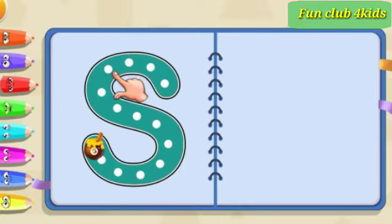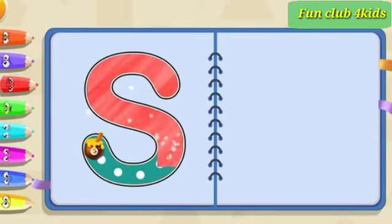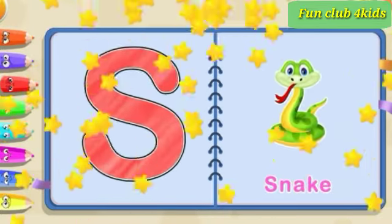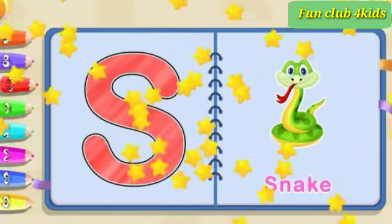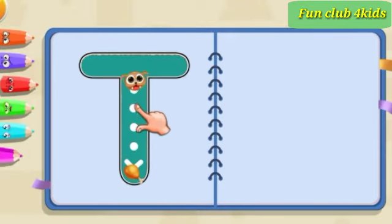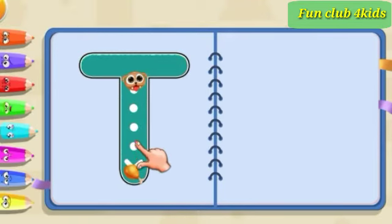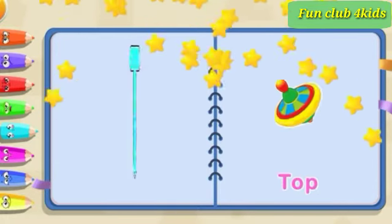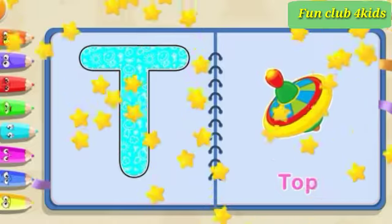Pull back, in a cross down, and back around. S is for snake. Pull down, across at the top. T is for top.